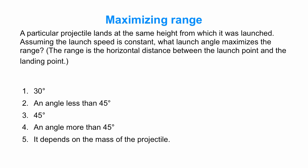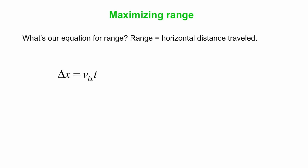Maximizing range. Again, the projectile lands at the same height from which it was launched. At what angle do you shoot it so it goes the furthest horizontally? The horizontal distance between the launch point and the landing point is the range. So what's our equation for range? Pretty simple. Delta X is V initial X times T, where T again is the time of flight.